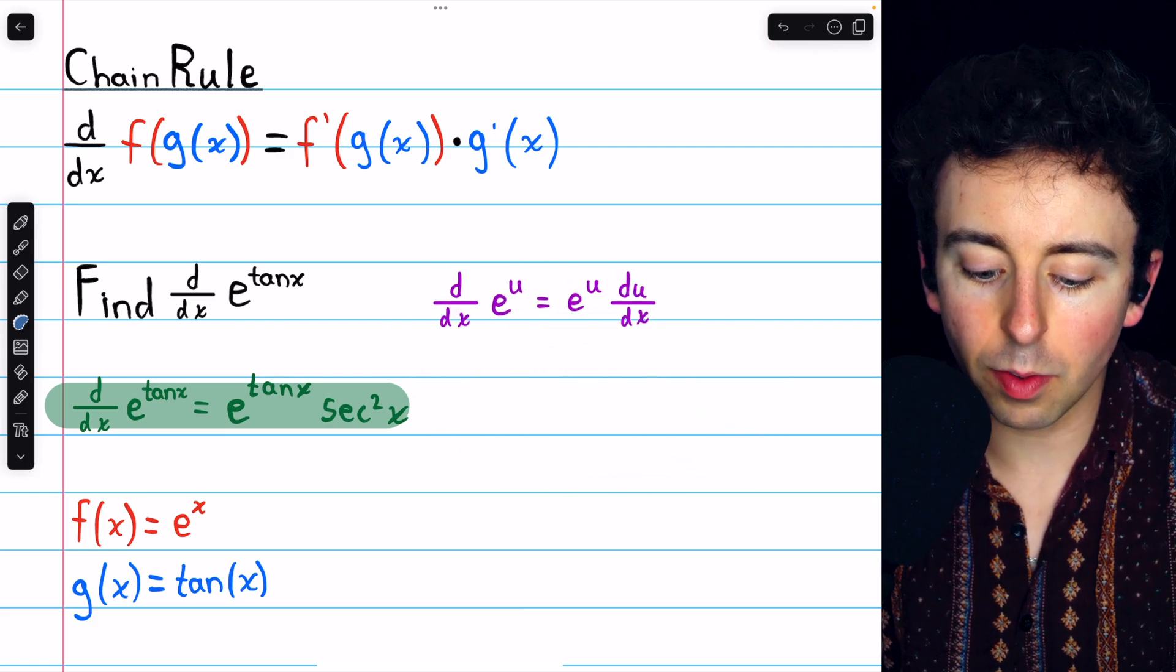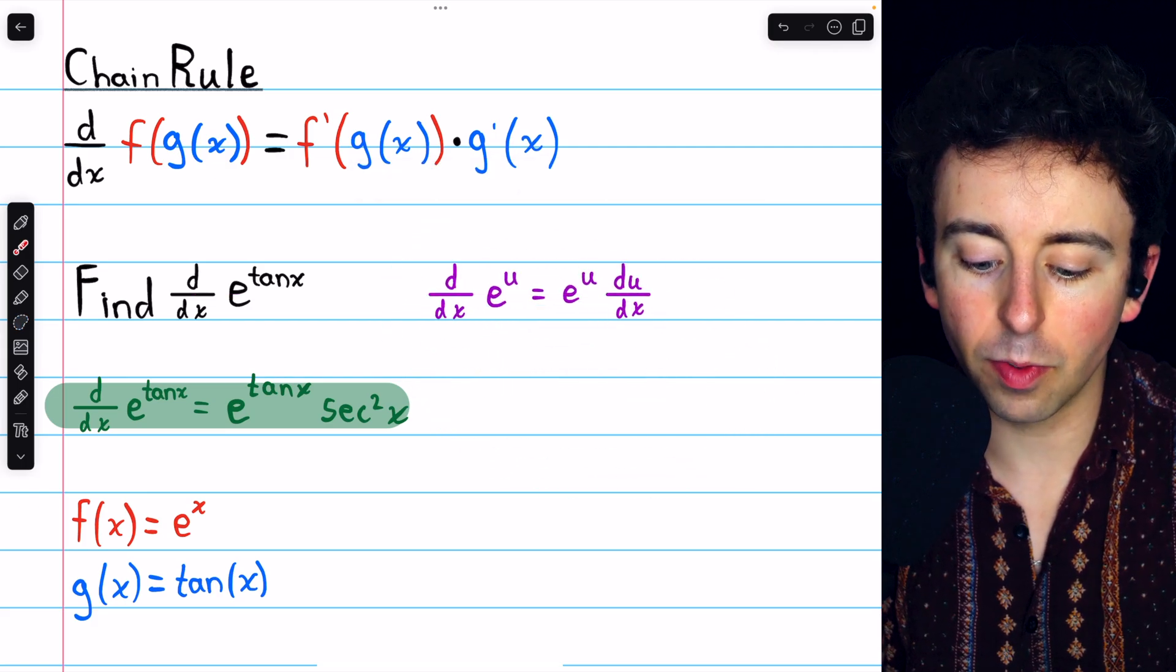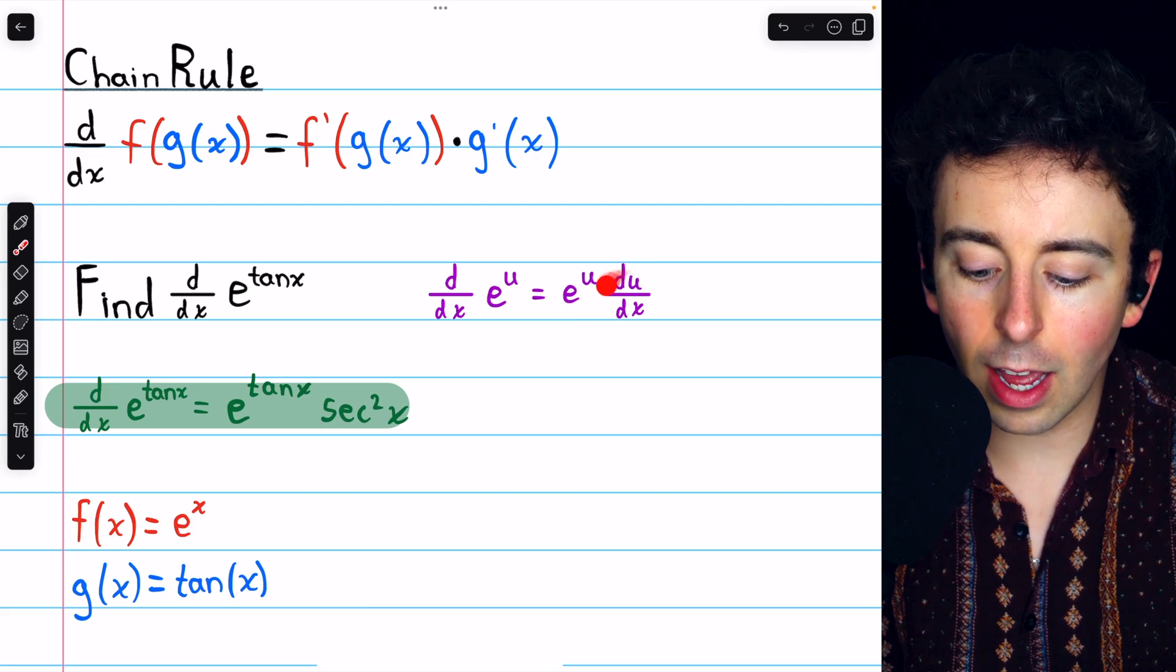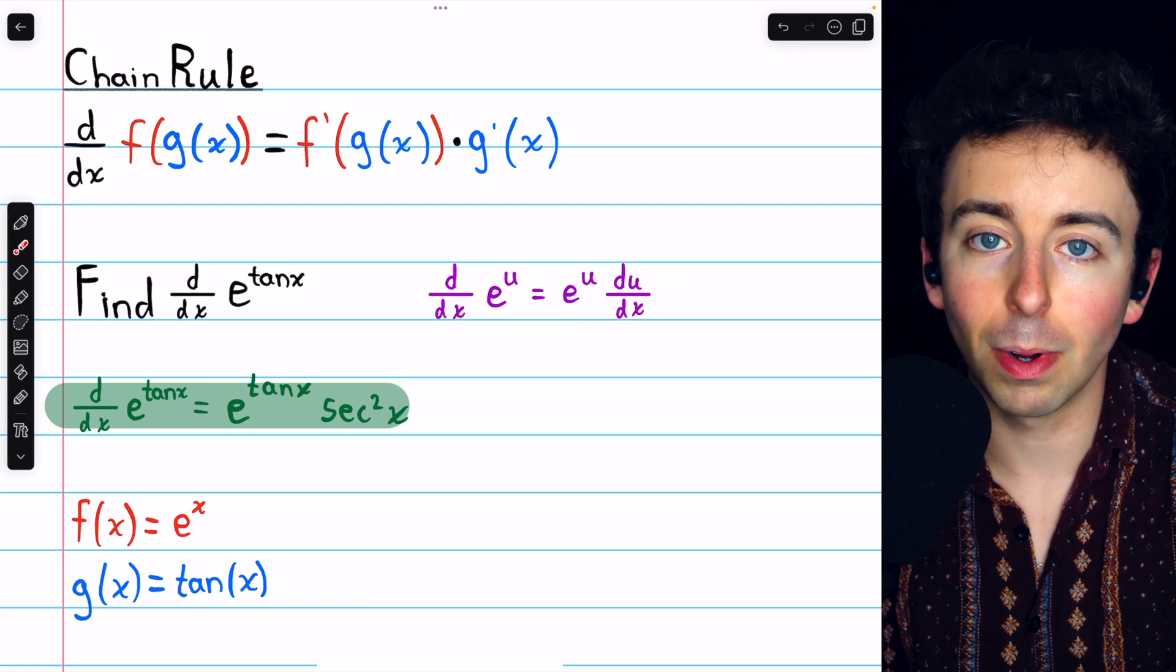In general, the derivative of e to the power of some function u is just e to the u times the derivative of u, by the chain rule.